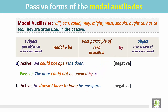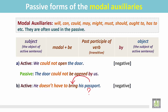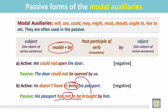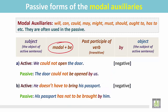Another example. 'He does not have to bring his passport.' His passport is the object of the verb 'bring.' We can change this active sentence into passive. In the passive, the object becomes the subject. The modal with be is 'has to be,' and it is negative, so 'not' goes in between. The verb should be in the past participle form: 'brought by him.' His passport has not to be brought by him.